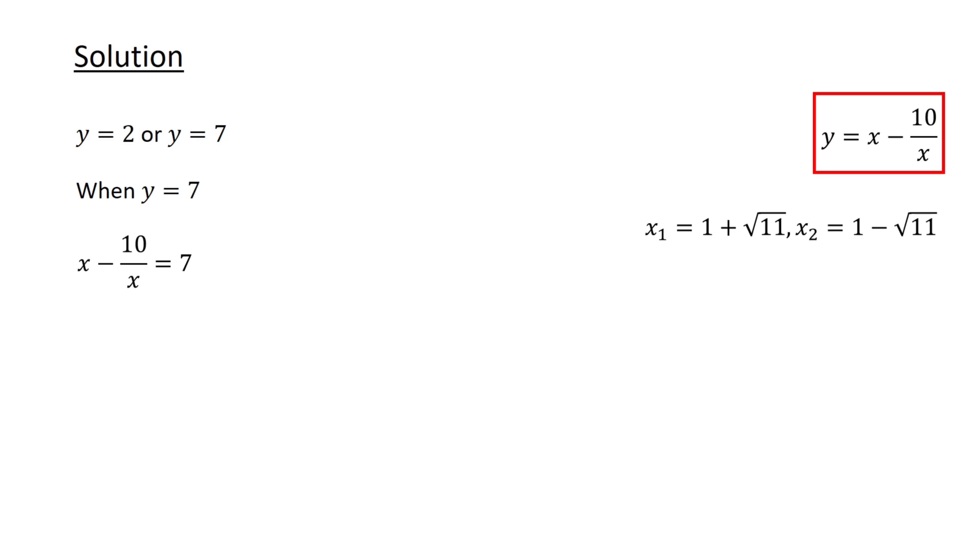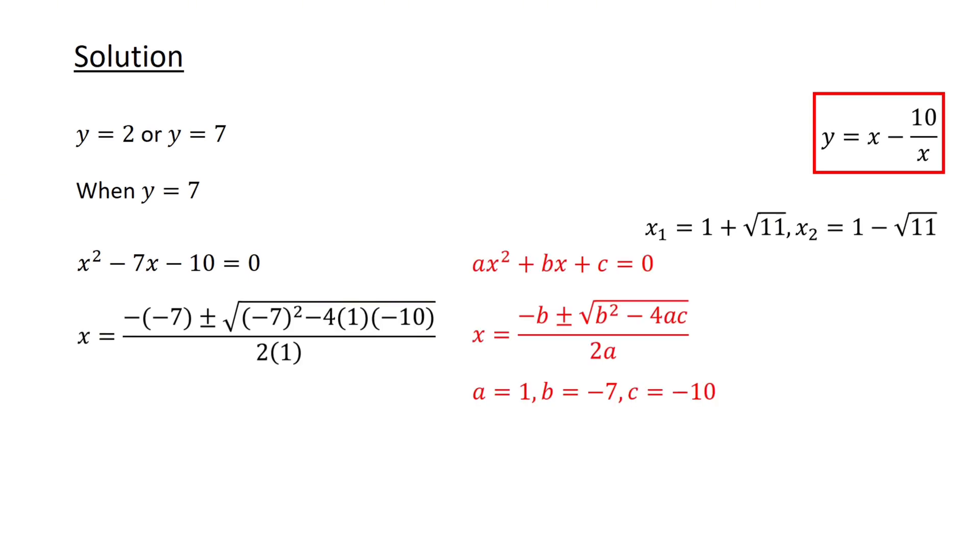When y equals 7, we have x minus 10 over x equals 7. Multiplying both sides of the equation by x to clear the denominator and rearranging, we get another quadratic equation: x squared minus 7x minus 10 equals 0. Another application of the quadratic formula, with a equals 1, b equals minus 7, and c equals minus 10, gives us two more solutions: 7 plus root 89 over 2 and 7 minus root 89 over 2.